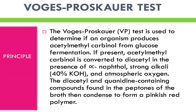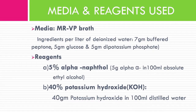In 1936, Barritt made the test more sensitive by adding alpha-naphthol to the medium before adding potassium hydroxide. Principle: the VP test determines if an organism produces acetylmethylcarbinol from glucose fermentation. If present, acetylmethylcarbinol is converted to diacetyl in the presence of alpha-naphthol, strong alkali, and atmospheric oxygen. Alpha-naphthol acts as a color intensifier and must be added first. Diacetyl and related compounds found in the peptones of the broth condense to form a pinkish-red polymer.